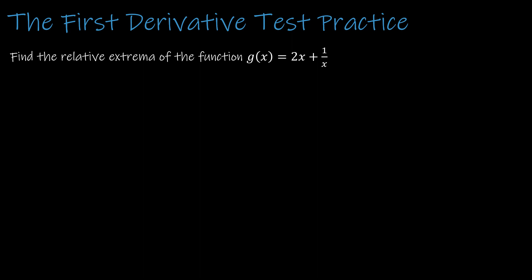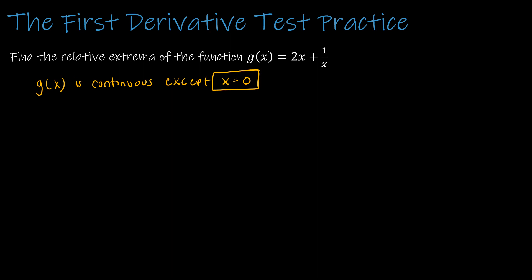Here's a second example. We start by discussing g(x) and its continuity. g(x) is continuous everywhere except x = 0, because 1/x would give an undefined fraction there. So when dividing up the domain, we must include x = 0. Next, find g′(x): the derivative of 2x is 2, and 1/x is x^(−1), whose derivative is −x^(−2). So g′(x) = 2 − 1/x².